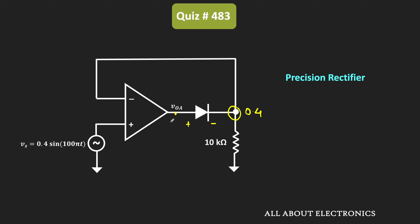So if you know this circuit, you can easily find this VOA. But suppose if you do not know how this circuit works, then also using the basics of the op-amp as well as using simple circuit analysis, you can find this VOA. So let us also see how to find that.